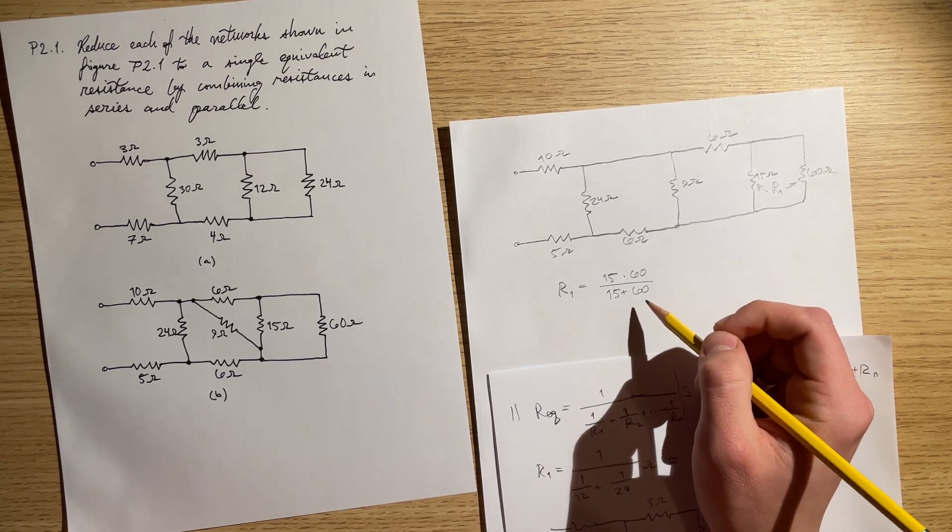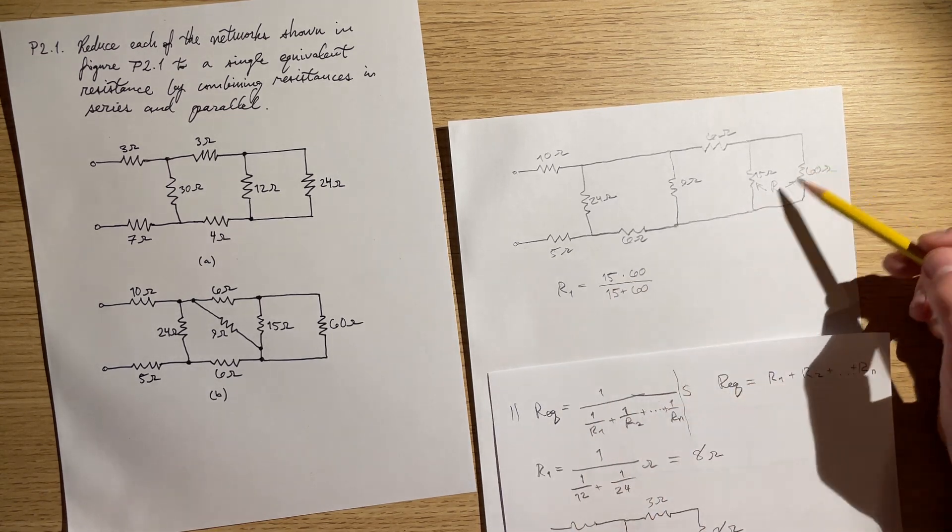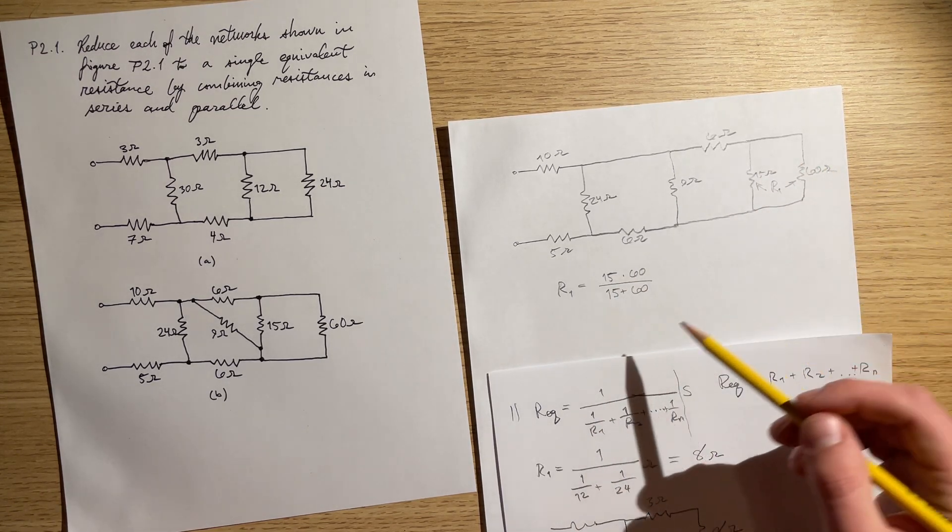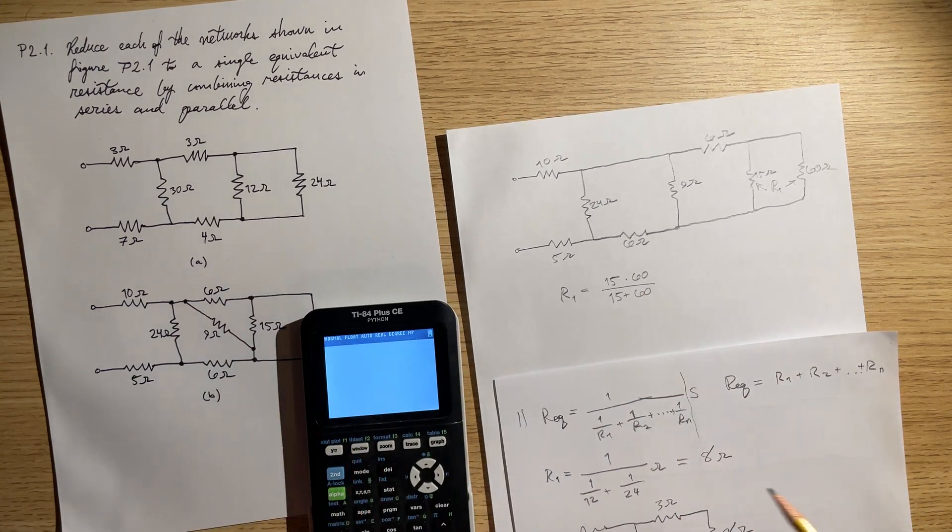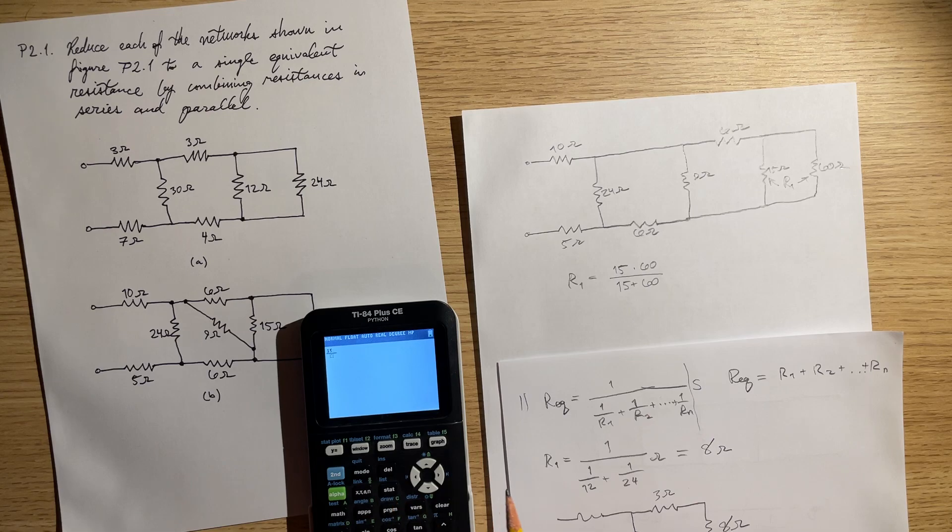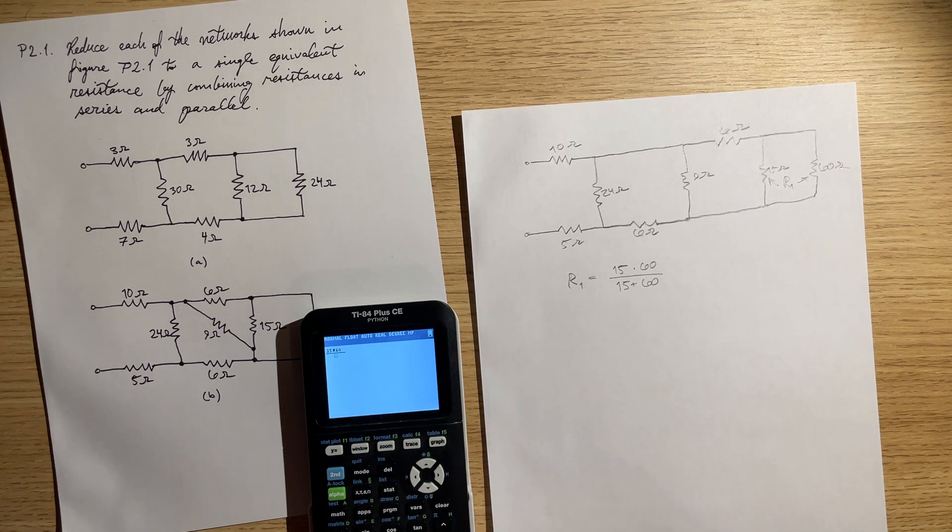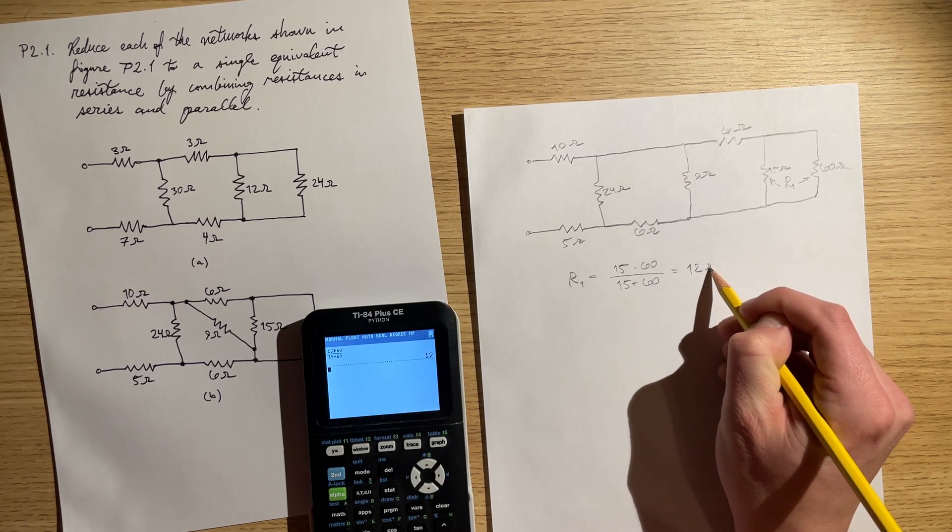It gets a lot more complicated for three and so on. So usually when you just have two of these, it's much more convenient to do this than to put into your calculator this whole thing. Use it as you see fit. They're both right.